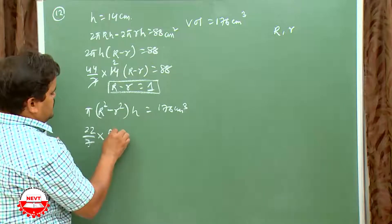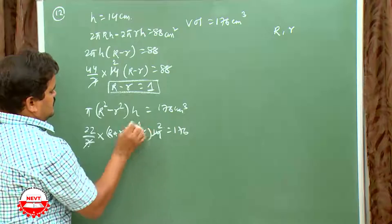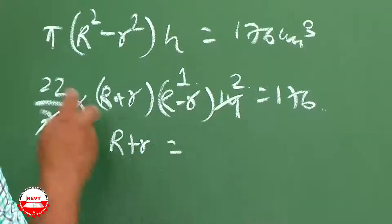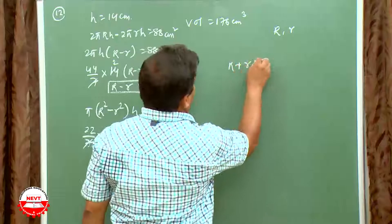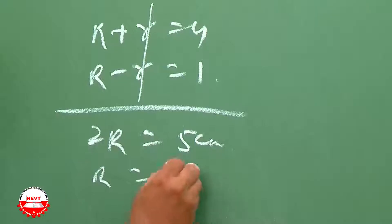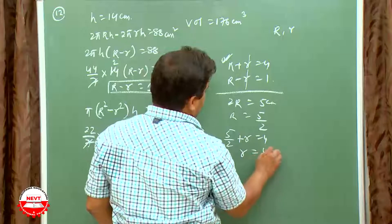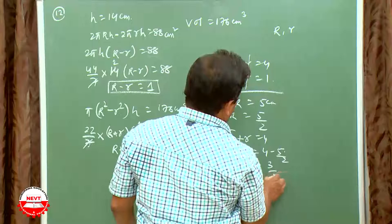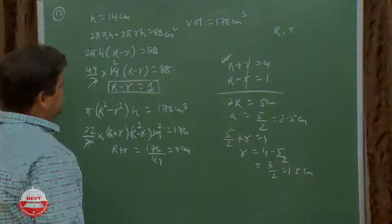Volume: π(R² − r²)h = 176, so (22/7)(R+r)(R−r) × 14 = 176. Since R − r = 1: 44(R + r) = 176, giving R + r = 4. Adding R + r = 4 and R − r = 1: 2R = 5, so R = 5/2 = 2.5 cm. Then r = 4 − 5/2 = 3/2 = 1.5 cm.